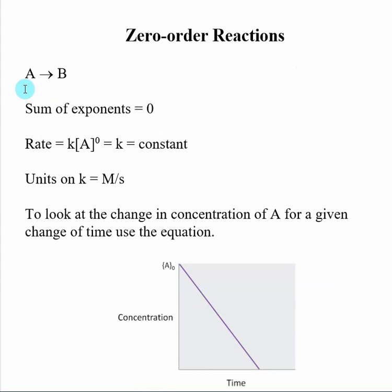So here, if I take a generic reaction, A going to B, saying that it's zero order means that the sum of the exponents in my rate law expression must be equal to zero.